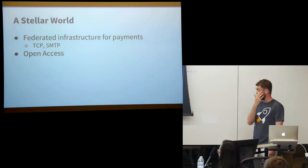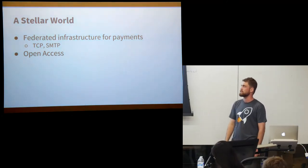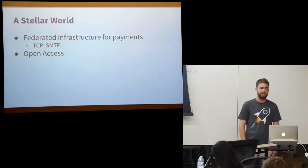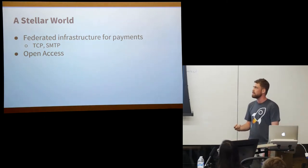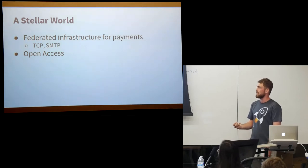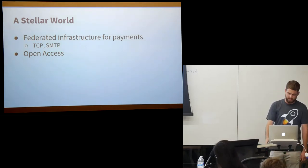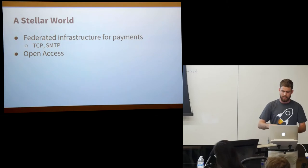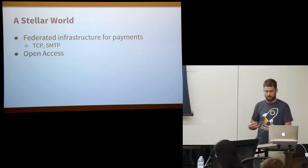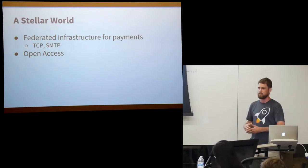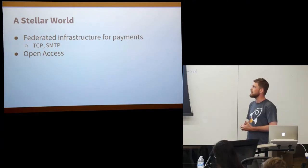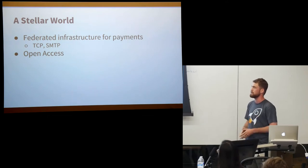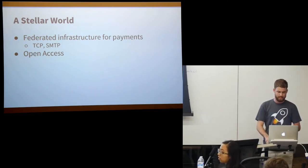That's what Stellar is all about: a federated infrastructure for payments. It's not intended to be user-facing; it's intended to bring disparate payment networks together, including Bitcoin. Like its predecessors — TCP enabling the world's first global network, SMTP enabling email transfer between ISPs — Stellar attempts to be the public infrastructure connecting payment systems together with open access.